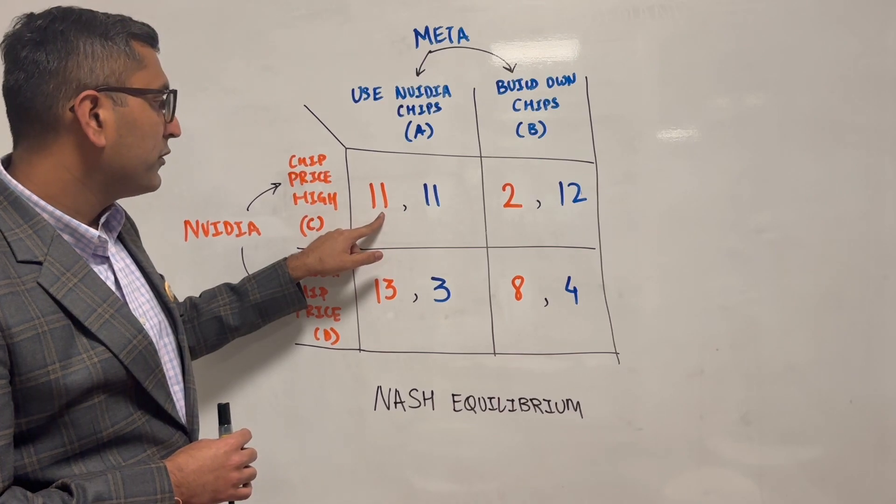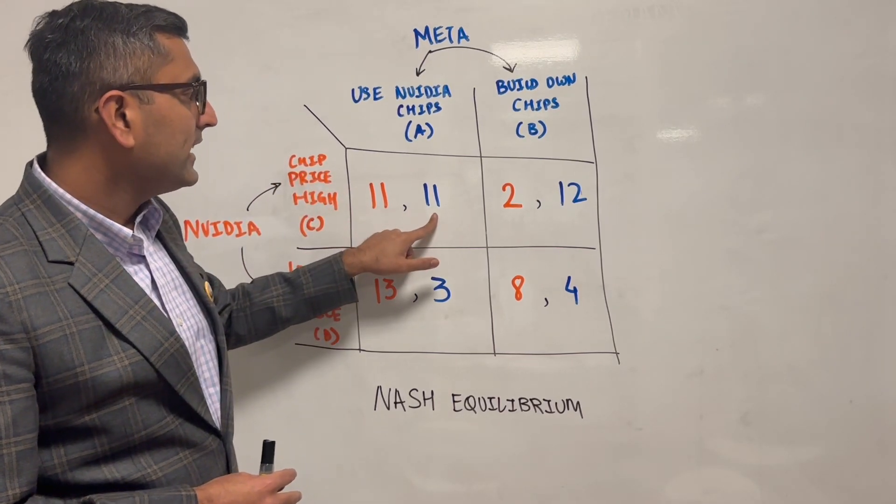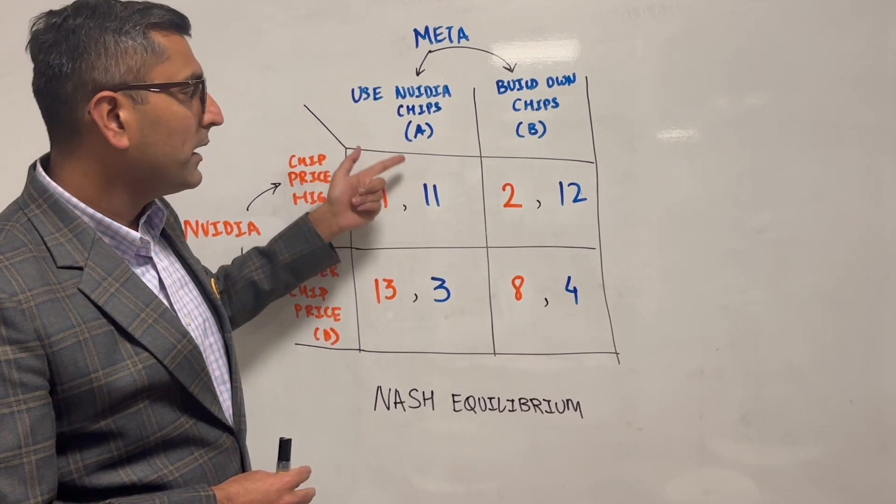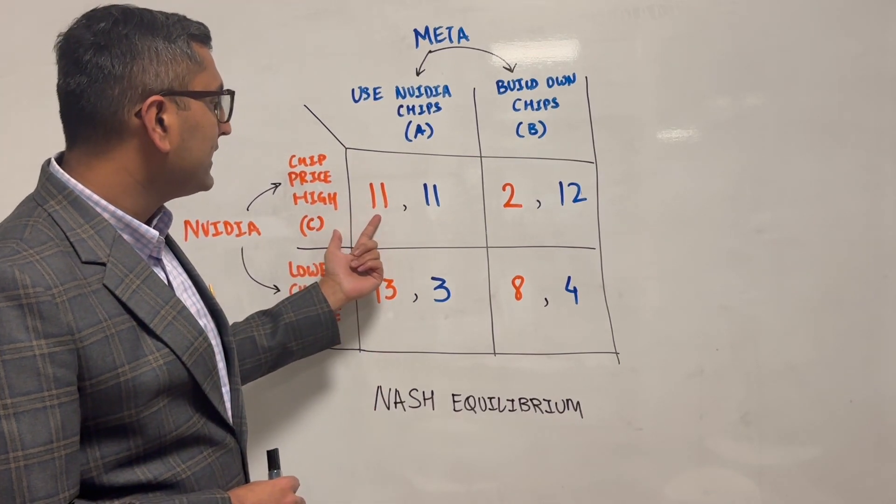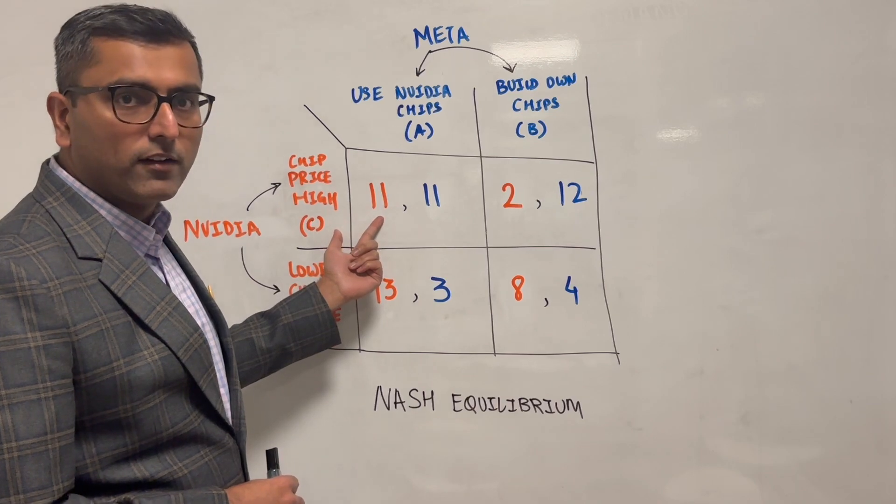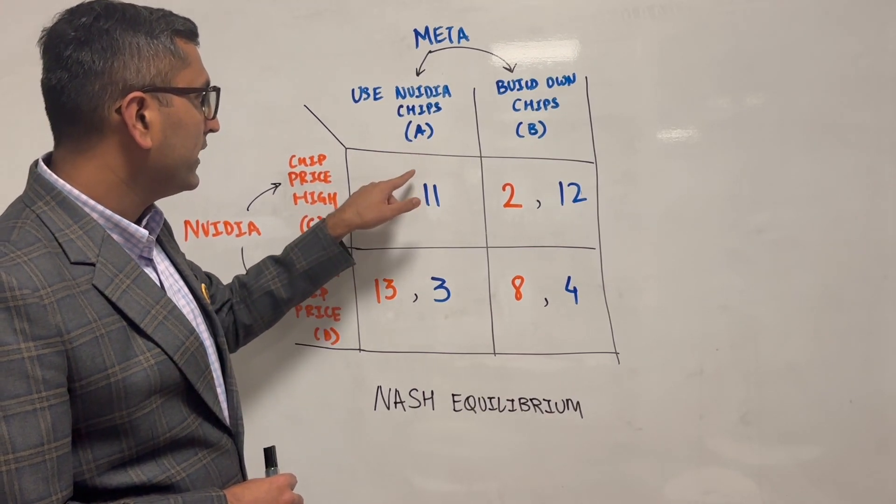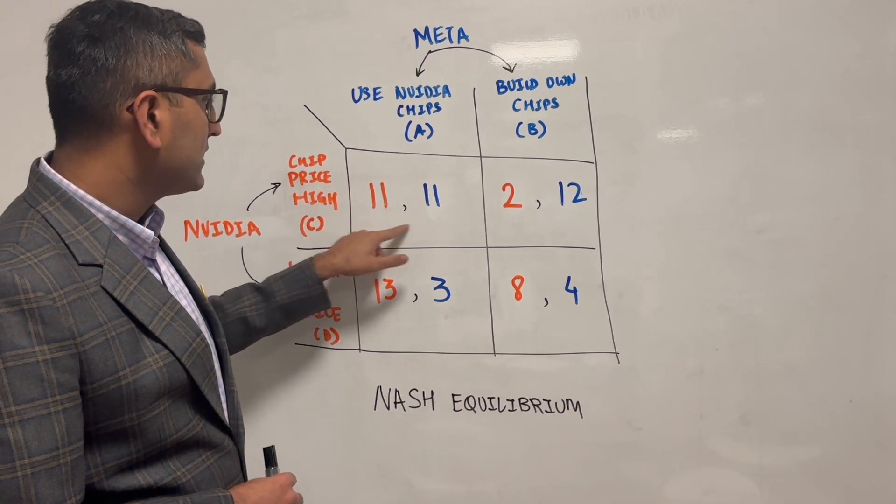If Meta chooses choice A and Nvidia chooses to keep the price high, then the payoffs for each of them would be in this distribution. So Nvidia would get 11 billion dollars incremental. Meta gets 11 billion dollars incremental if they continue to use Nvidia's chips but not invest in a major factory. A payoff is basically what is the benefit for this specific choice pair.